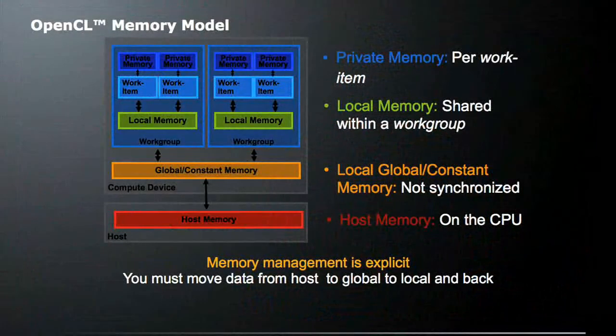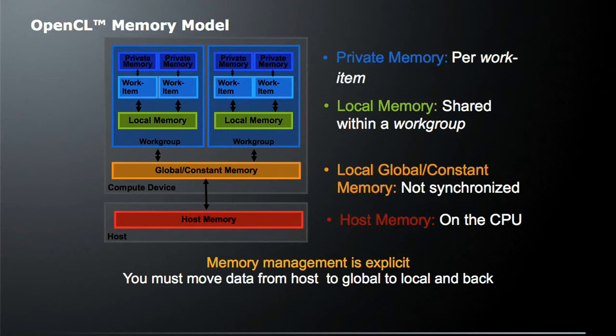Now let's look at the OpenCL memory model. We'll start with our host here on the bottom and our compute device. Our host processor has some host memory — this is memory that's on the CPU and accessible by the CPU. Our compute device has a global memory as well as constant memory. This is not synchronized, so when we access this memory it is not synchronized, and we have to be very careful using it within a single kernel.